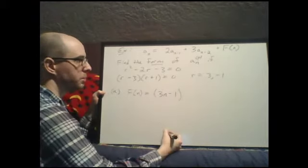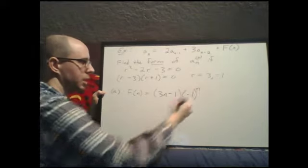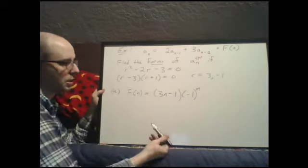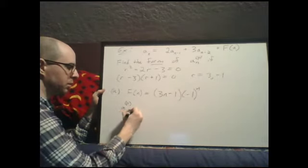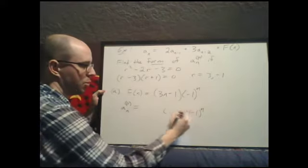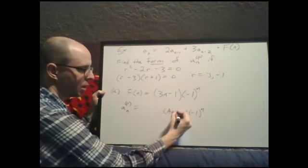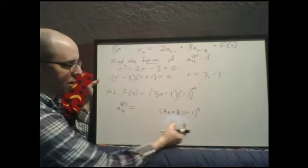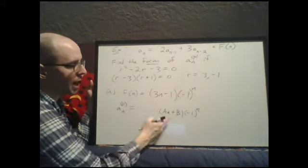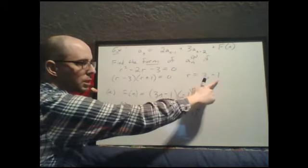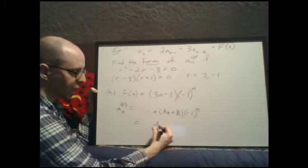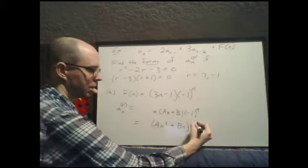Part b: f(n) equals (3n minus 1) times negative 1 to the n. The base is negative 1, which is in our list of roots. We start by matching the same form: negative 1 to the n times a degree-1 polynomial (a·n plus b). But negative 1 to the n times b would appear in the homogeneous solution, so we multiply by n to the multiplicity of negative 1, which is 1. The particular solution becomes (a·n² plus b·n) times negative 1 to the n.